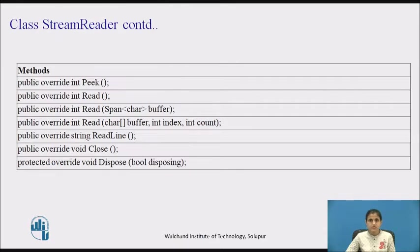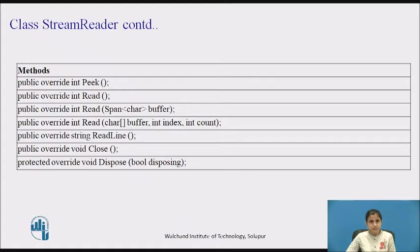Now we'll see a few methods of the StreamReader class. The first method is the Peek method. It returns the next available character — represented as an integer — without consuming it. If there are no characters to be read or if the stream does not support seeking, it returns -1. The next method is Read. It reads the next character or the next set of characters from the input stream. There are three overloaded Read methods. The Read method without a parameter reads the next character from the input stream and advances the character position by one, returning the character as an Int32 object or -1 if no more characters are available.